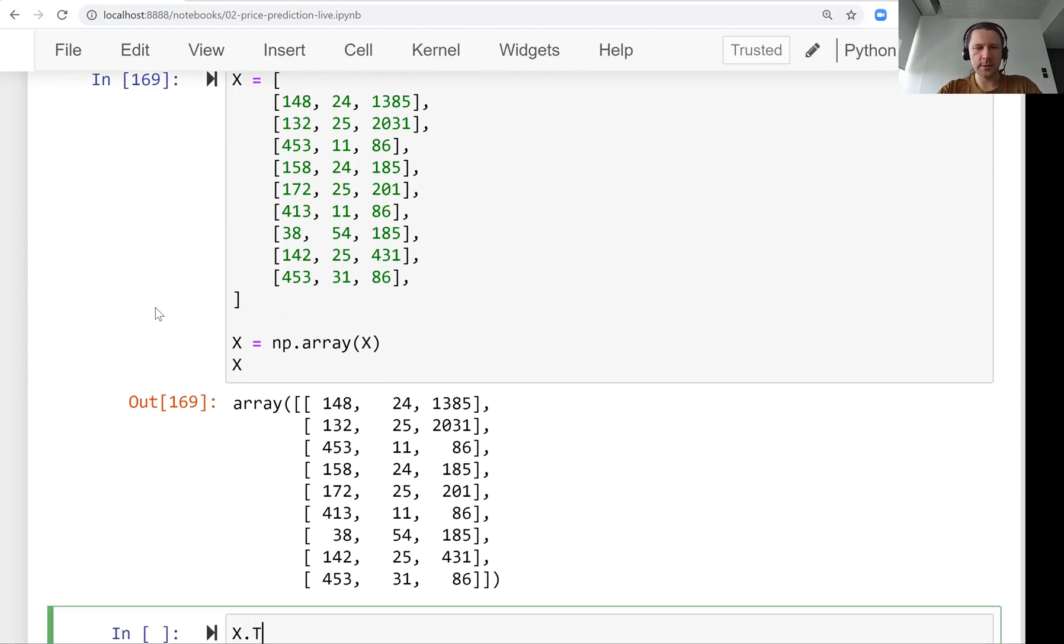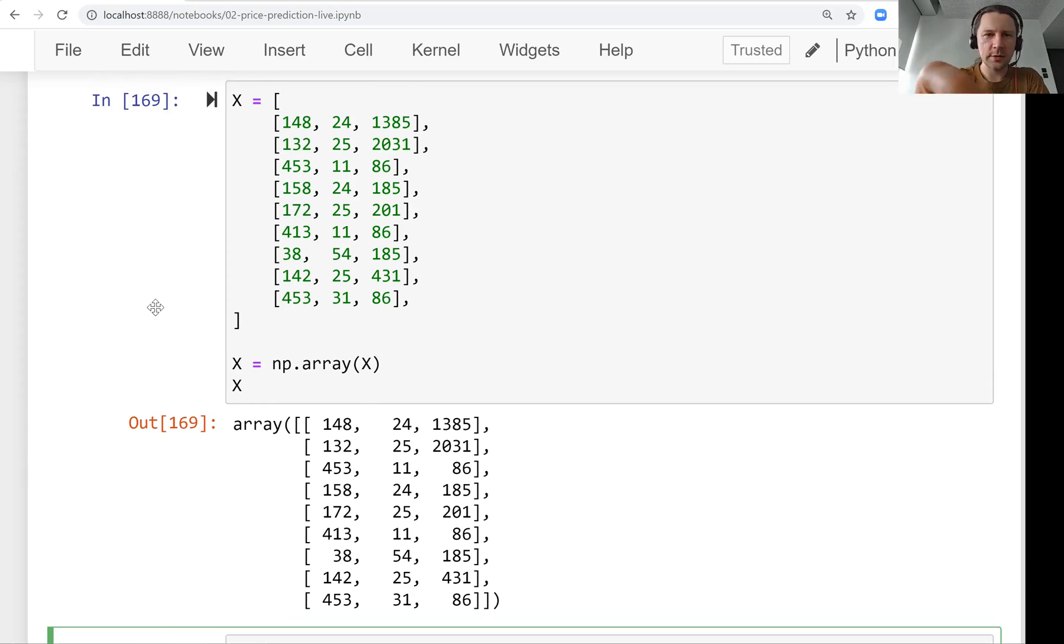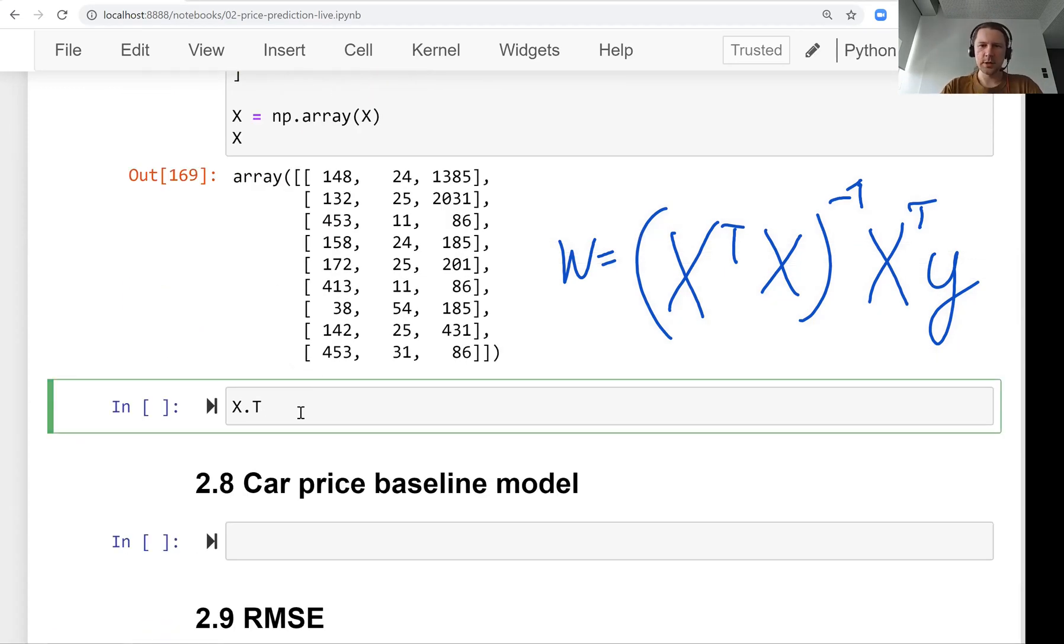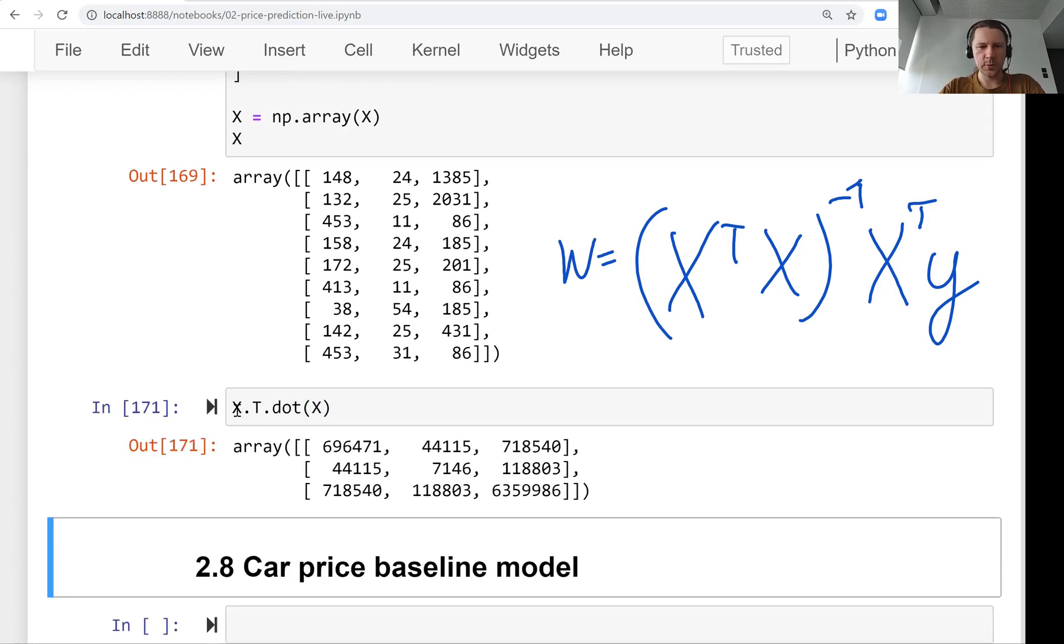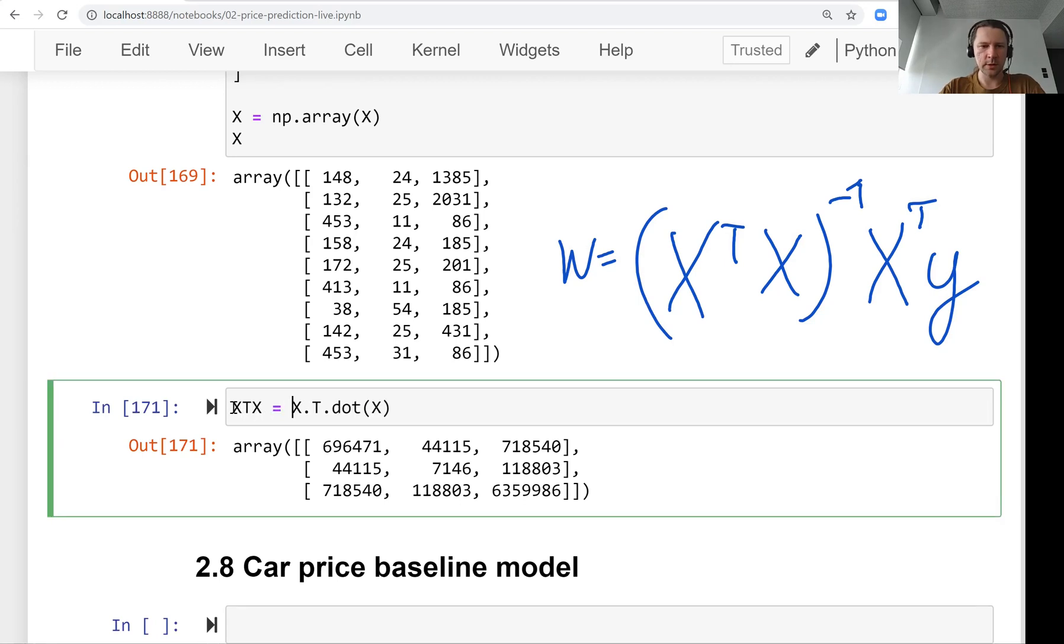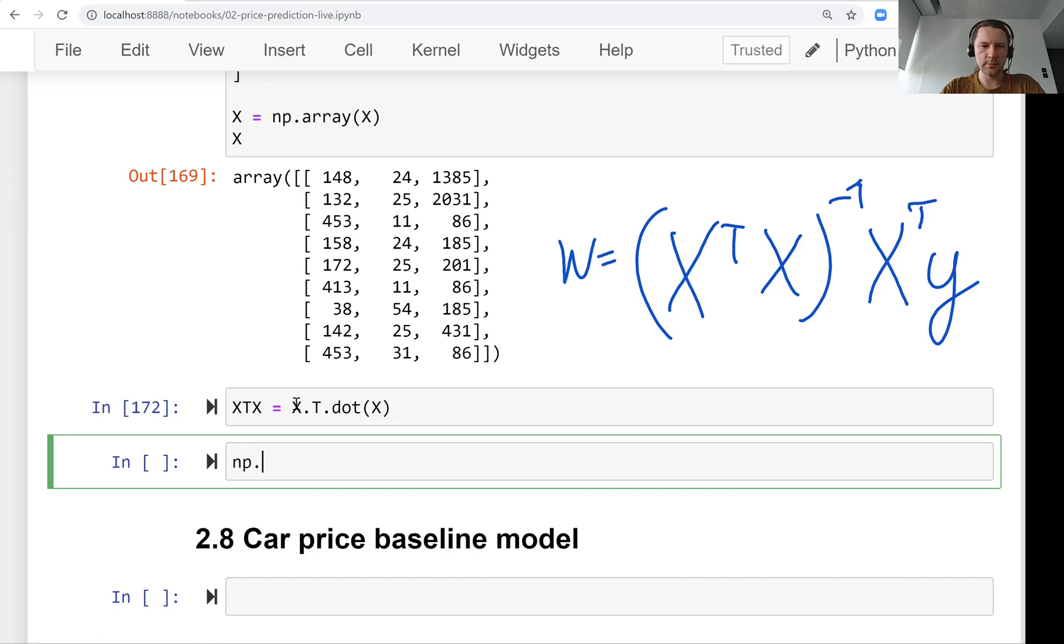And what we need to do next is, let me just have it here so we know what we are implementing. So we have this gram matrix, the inverse of this. Then we have X transpose and then we have Y. And this is our vector W. So first, let's implement the gram matrix. Let's calculate it. So that is pretty simple. Yeah, of course, it should be X. So we have the gram matrix. Let's call it XTX. And then we need to find its inverse.